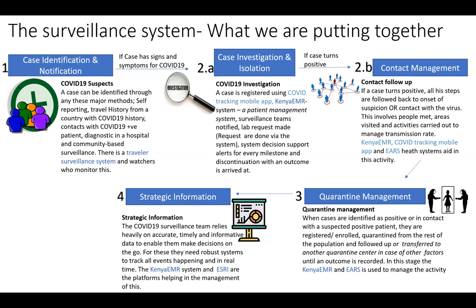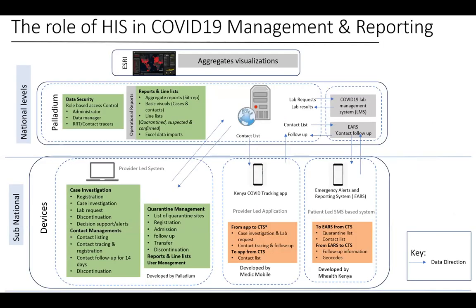The contact tracing team lists out the contacts, traces them, and follows them up for 14 days for any constitutional symptoms of COVID-19. Certain individuals are required to be on quarantine — we have built a system that allows for admission and follow-up of individuals on quarantine. Surveillance is about information, so strategic information is part of the solution. The steps from 2A all the way to step 4 have been automated through OpenMRS and other solutions. This is a simple representation of the architecture, hosted at the emergency operations center.